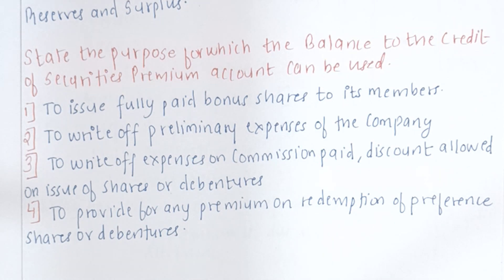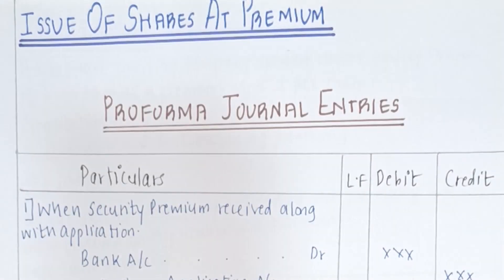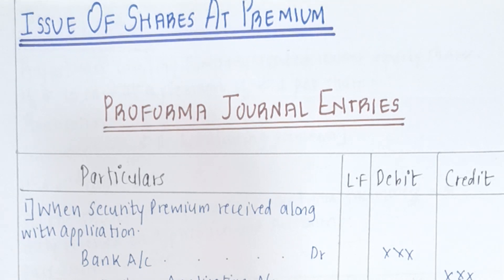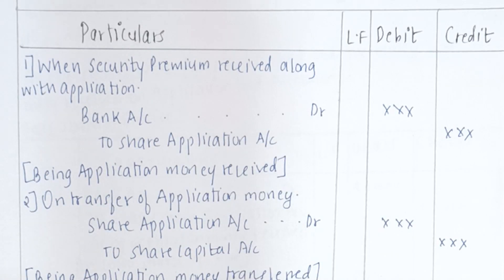This is just theoretical knowledge and you may or may not get a theory question on it. But in case security premium is asked in a problem, you should know how to solve it. Moving forward to issue of shares at premium, let's study the pro forma journal entries. The security premium can be received along with application or along with allotment. The first pro forma entry is when the security premium is received along with application money.